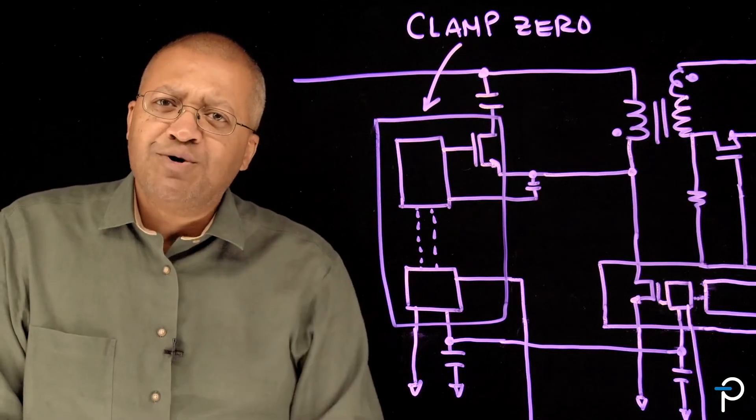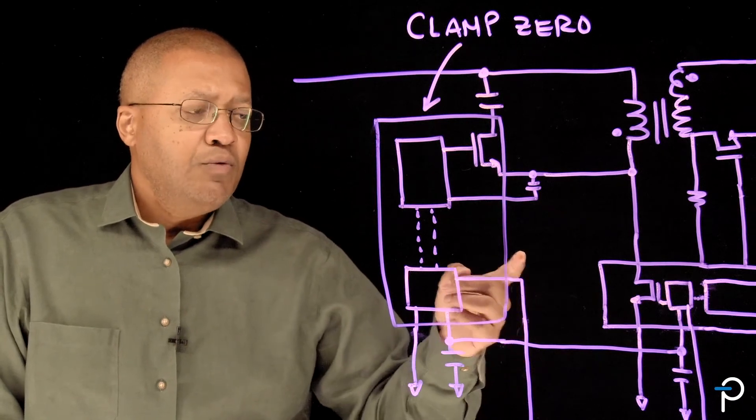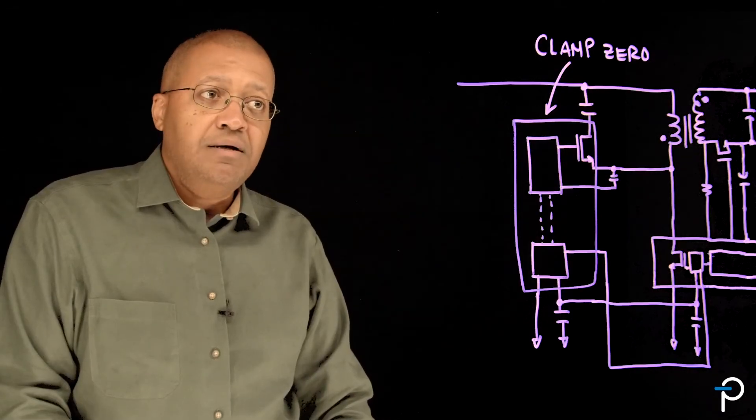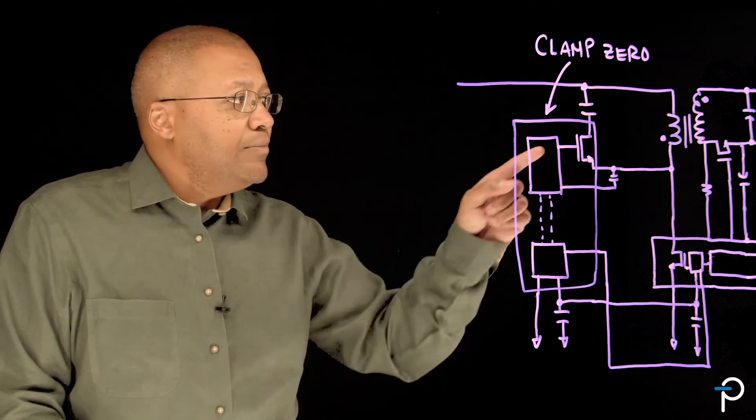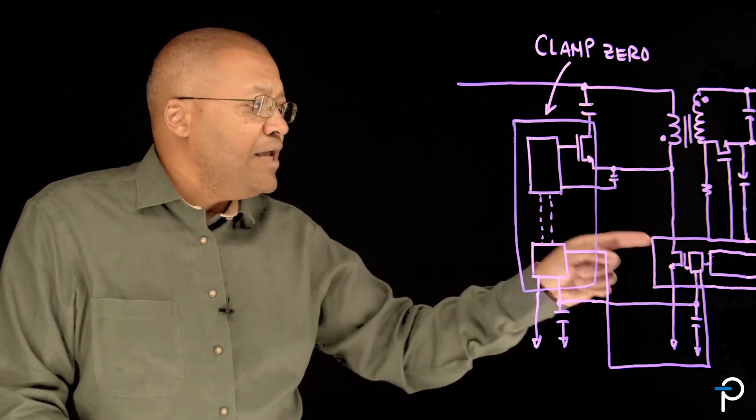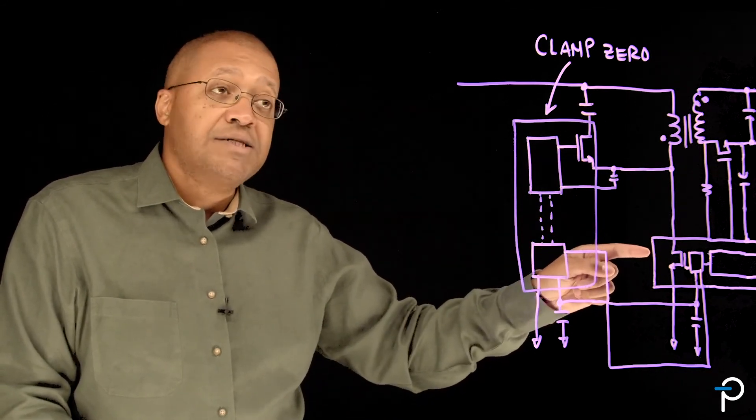So what's so special about the ClampZero and InnoSwitch 4? It's the method of our control for the active clamp. We use an on-demand, non-complementary type control, which only commutates the active switch for a short period of time right before the main commutation of the Power GaN inside the InnoSwitch 4.